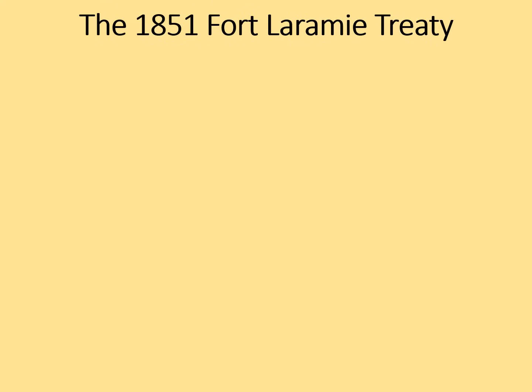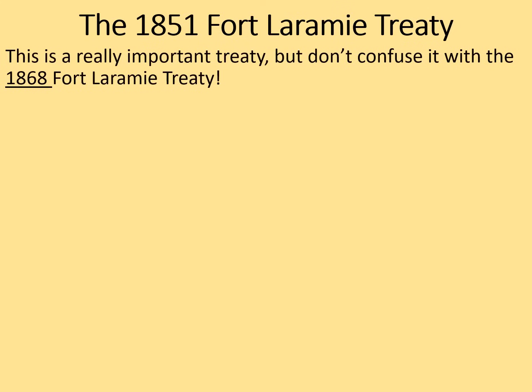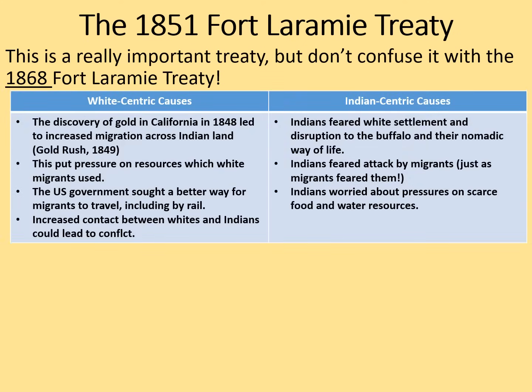Let's have a look in a bit more detail at the 1851 Fort Laramie Treaty. This is a really important treaty — don't confuse it with the 1868 Fort Laramie Treaty, which is not only later but quite different too. These are the white-centric and Indian-centric causes of this treaty. On the white side, the discovery of gold in California in 1848 had led to increased migration across Indian land — the Gold Rush was in 1849. The US government sought a better way for migrants to travel, including by rail, although this hadn't been built yet.